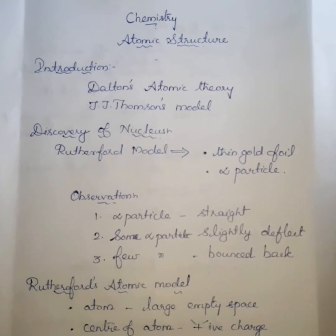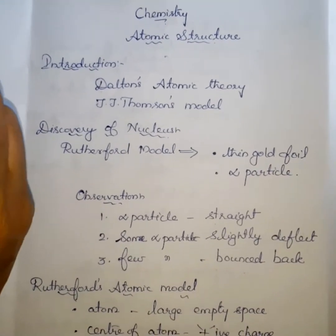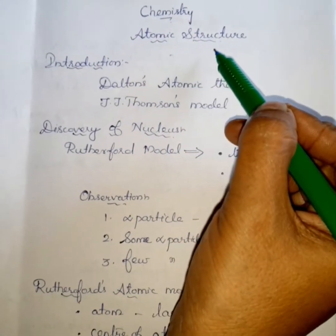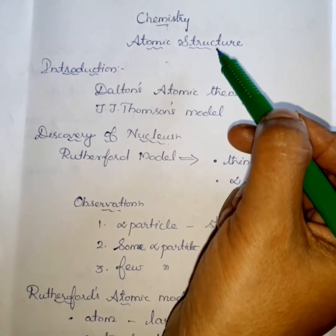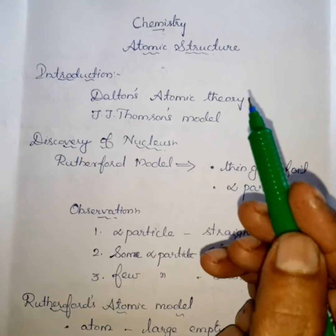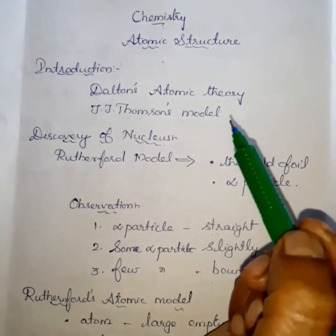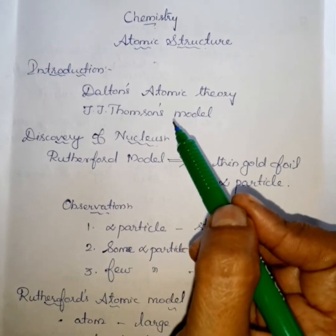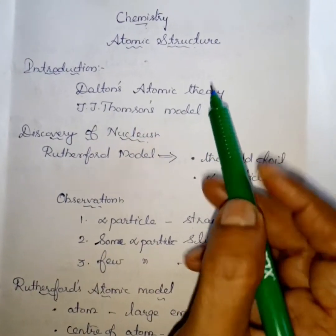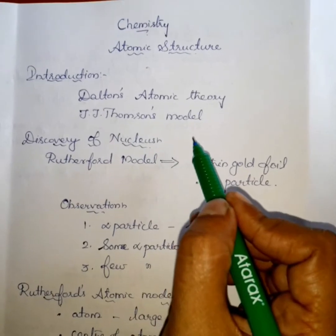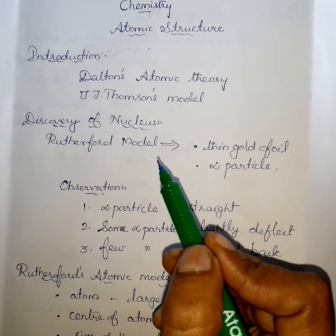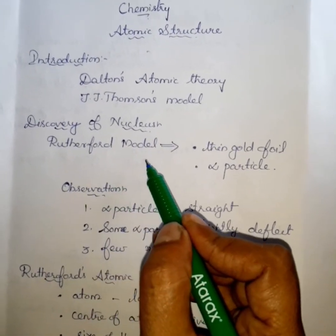Good morning students. Today we have to study the Chemistry 8th lesson, Atomic Structure. Already we are studying in 8th standard. We have to study 2 important atomic models of an atom. The 2 important atomic models are the Dalton Atomic Model and J.J. Thomson Model. Now we are going to study the Rutherford Atomic Model.